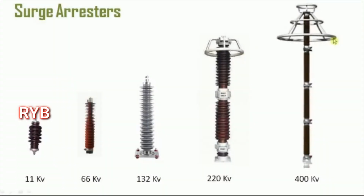These are lightning arrestors for different voltages: 11 kV, 66 kV, 132 kV, and 400 kV. For 400 kV, a ring is provided to address the corona effect.